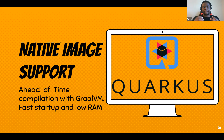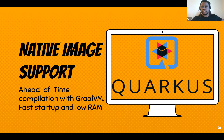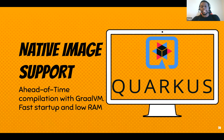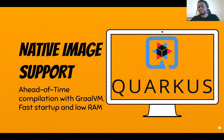GraalVM employs ahead-of-time compilation, which cuts away the interpretation step of Java. It takes your code straight from source to an OS-dependent machine-code executable — an EXE for Windows, a Linux executable for Linux. This opens Java to form factors we didn't dream were possible: embedded devices, microcontrollers, and more.